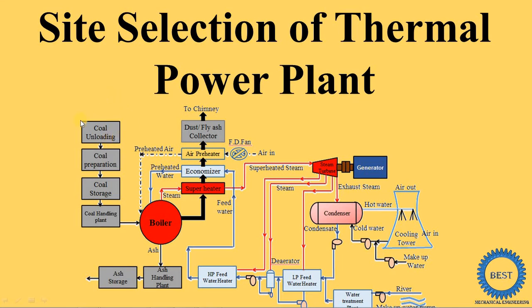Here in this diagram, you can see that the first thing required is the availability of coal. Second point: in the boiler, we supply water and it is converted into steam, so availability of water is also an important point. Third point is availability of labor — to operate thermal power plants, we require skilled as well as unskilled labor.